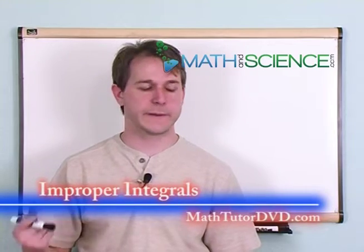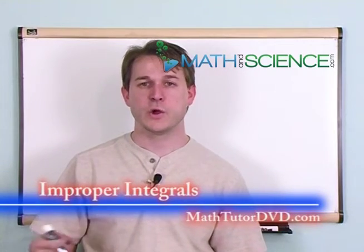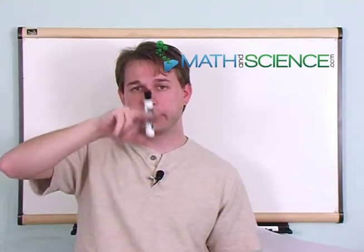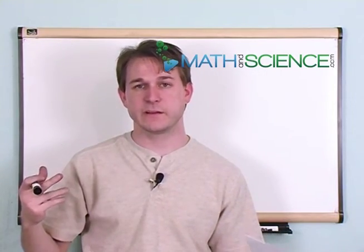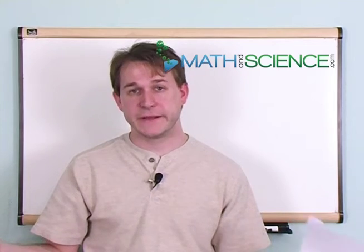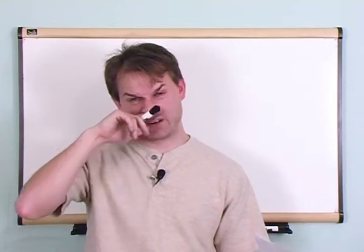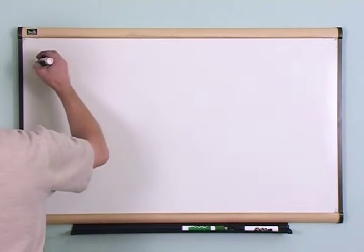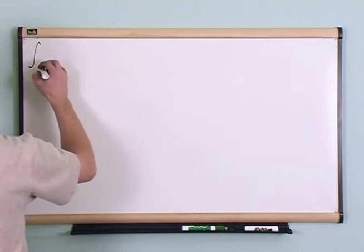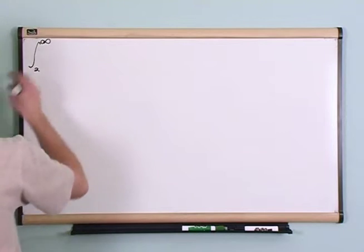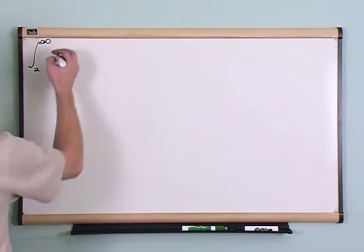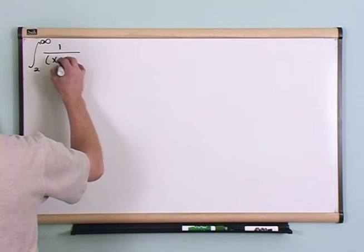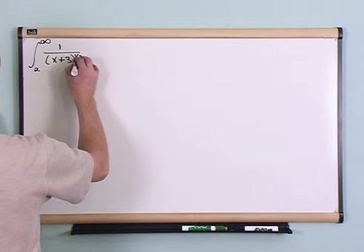In this section of the course we're going to talk about the topic of improper integrals, which are basically integrals where the limits of integration — the numbers that go on the integration symbol itself — usually involve infinity. Let's just do it by means of an example. We have the integral from 2 to infinity of 1 over (x + 3) to the one-half dx.